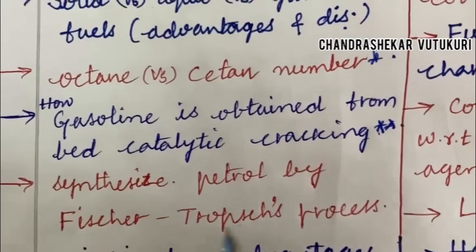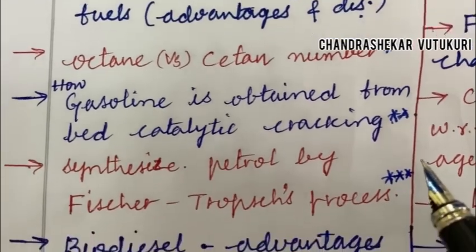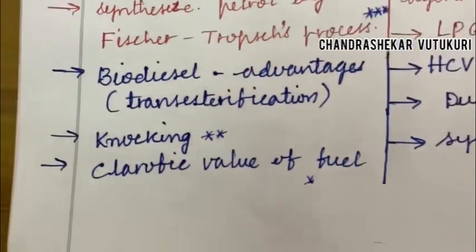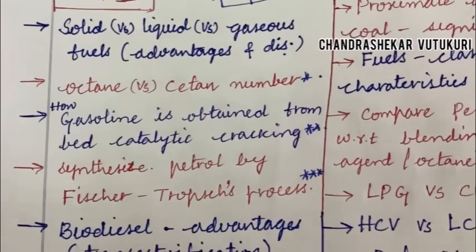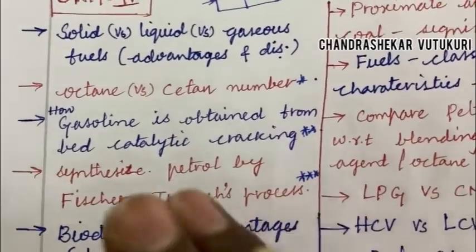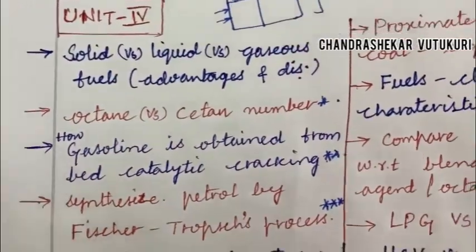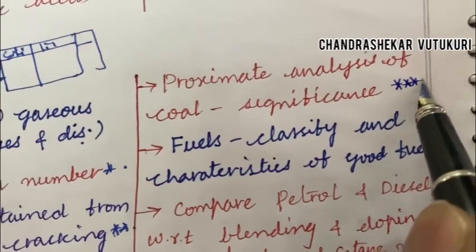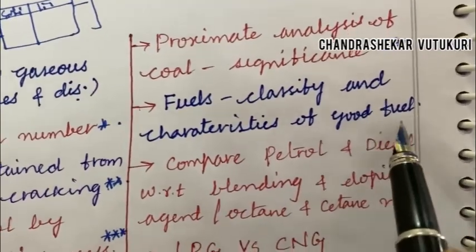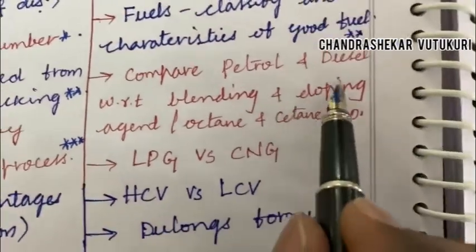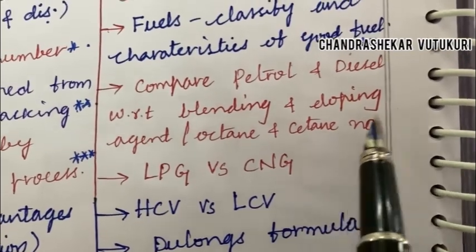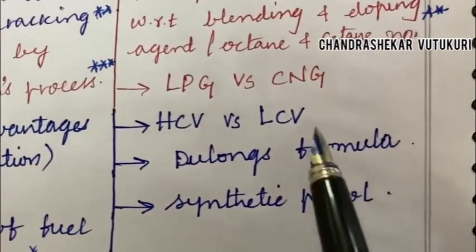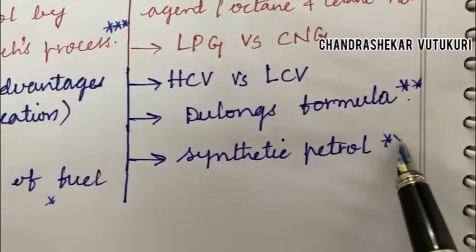Synthesis of petrol by the Fischer-Tropsch process is also said to be one of the topmost questions, which is going to occur in question 3A or B. Biodiesel advantages and knocking is said to be a short question, and calorific value of a fuel is also said to be one of the short questions. There is no separate video for the short questions — if you are thorough with all these concepts in the form of long and short, the questions will appear in the question paper. Proximate analysis of coal and its significance is said to be a topmost question. Classify fuels and characteristics of a good fuel, compare petrol and diesel with respect to octane and cetane number, and blending and doping agents may also be topmost questions for 5 marks. LPG versus CNG differences, HCV versus LCV, and Dulong's formula may also be short questions, and synthetic petrol may also be a short question.